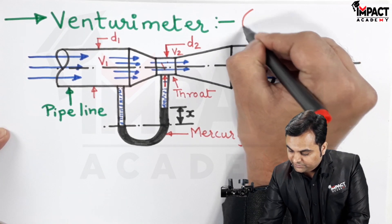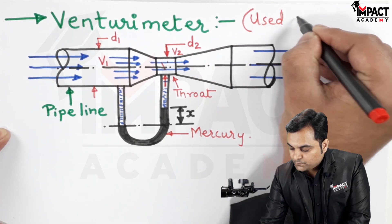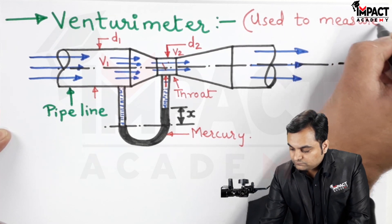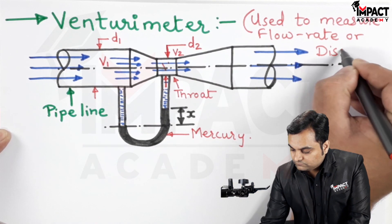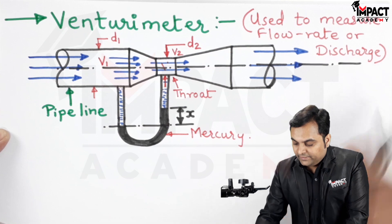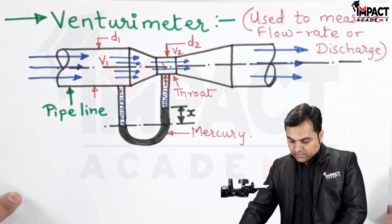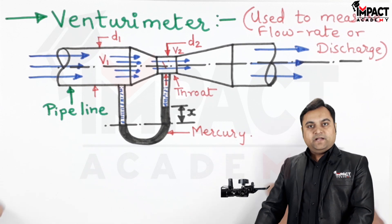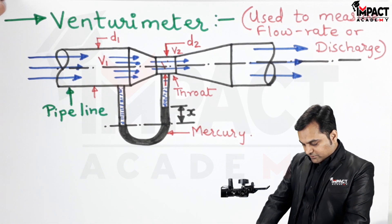First of all, venturimeter is used to measure the flow rate, also called as the discharge, and that flow rate is measured by using the formula or it is calculated by using the formula.